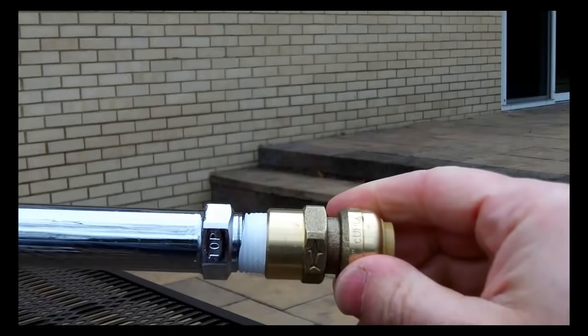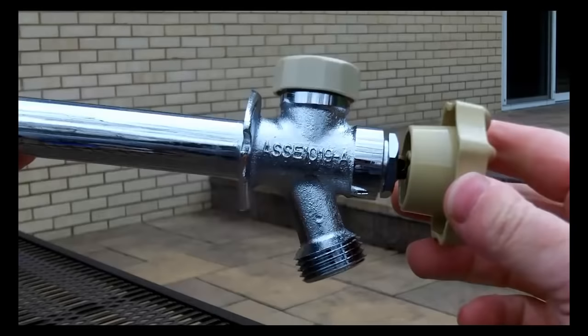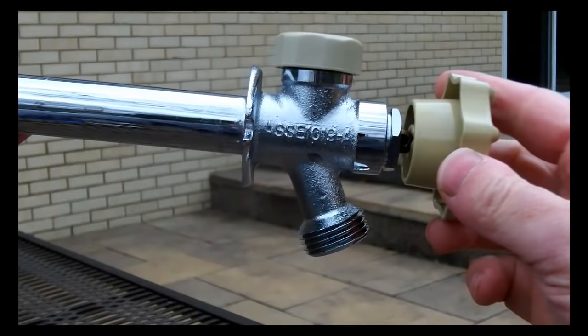Now one big tip I want to share with you with the silcock is when you go to install it, you want to make sure that it's tilted down by maybe about 5 degrees because you want the water to run down and out.